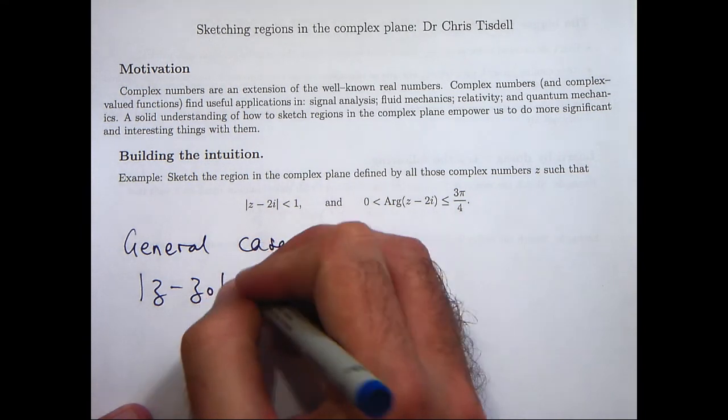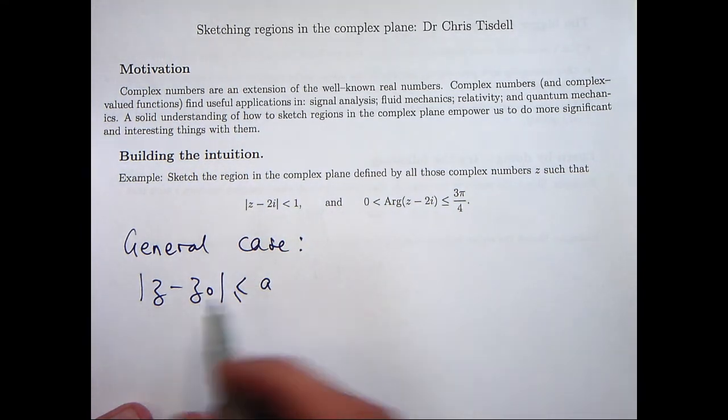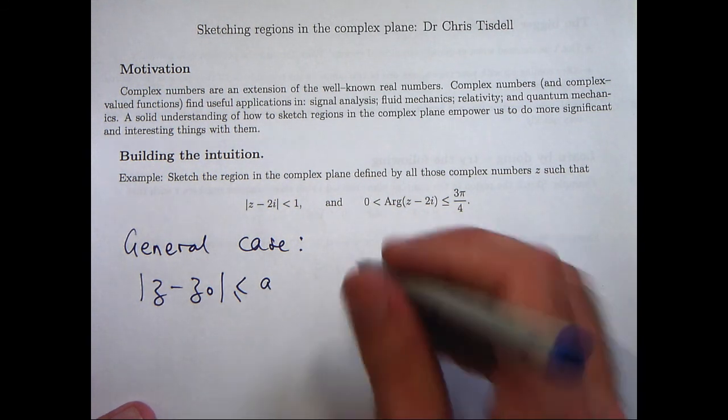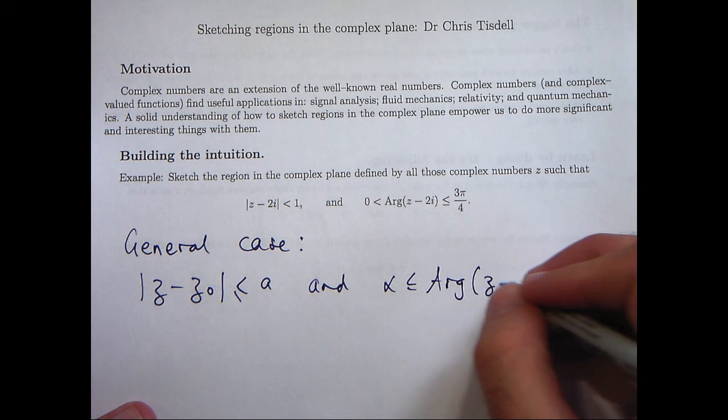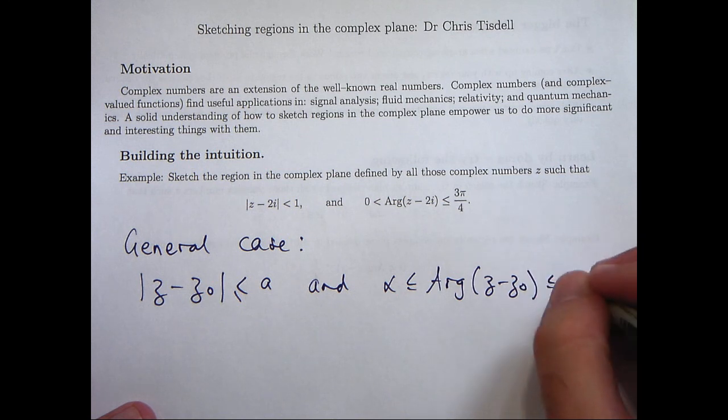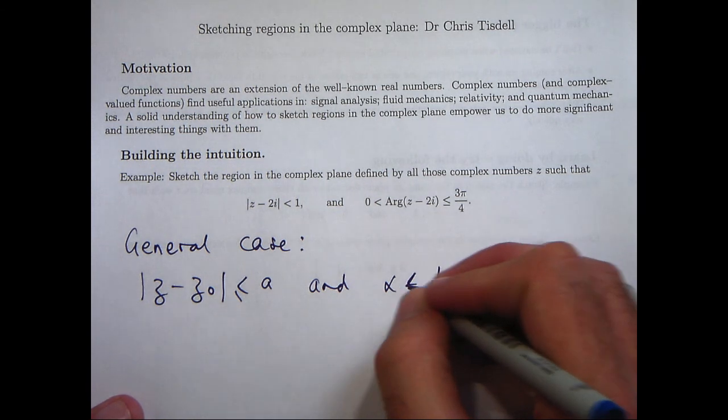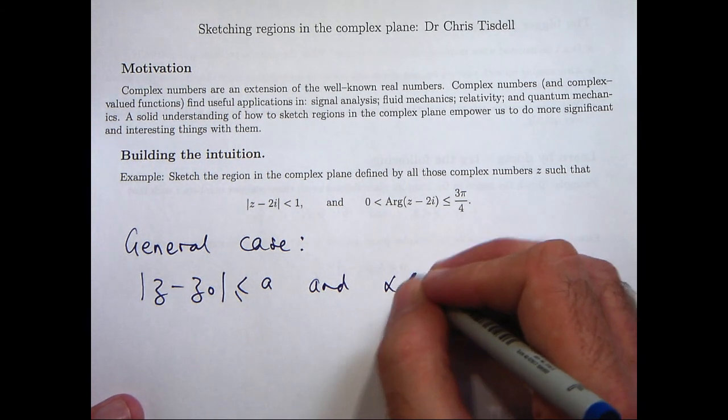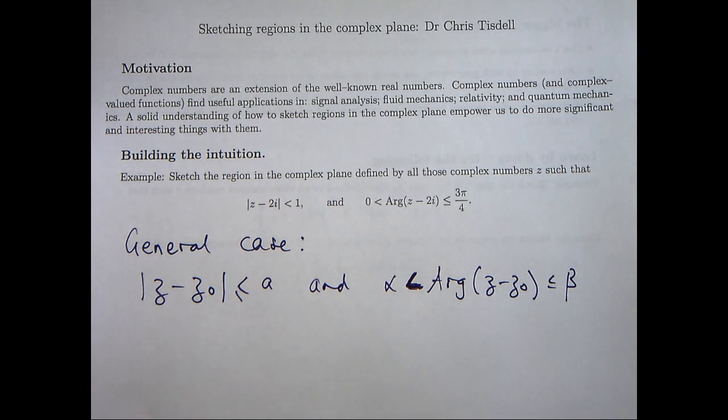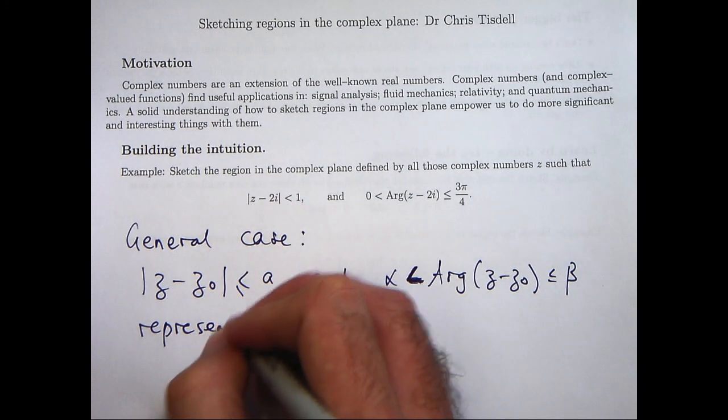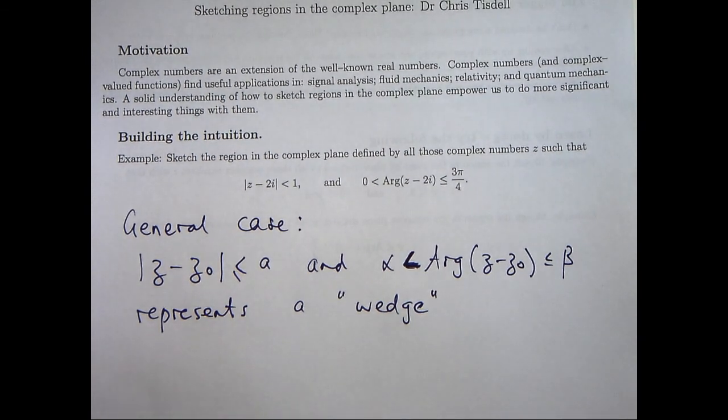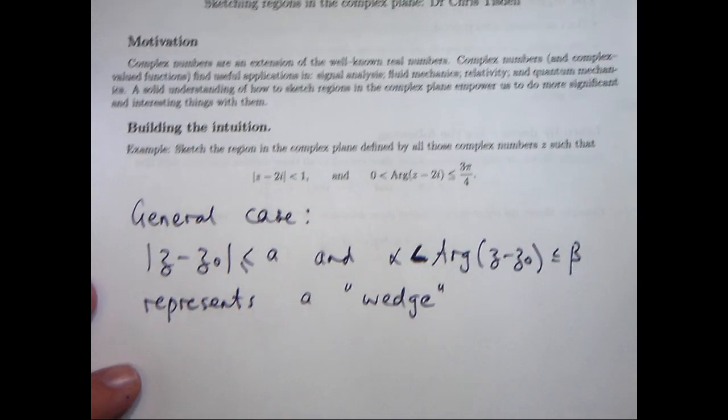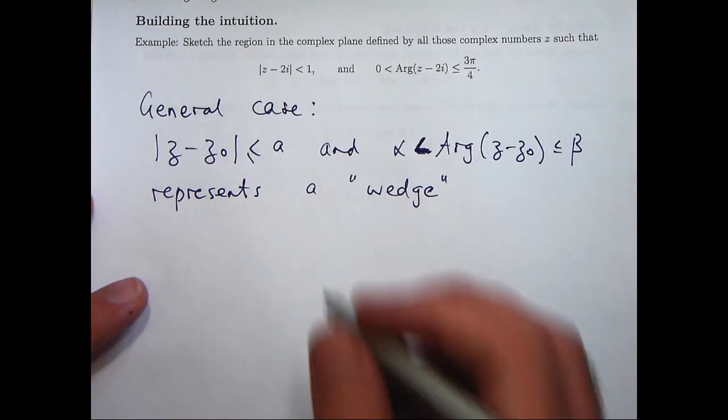So suppose z0 is a complex number, a is a positive real number, and alpha and beta are real numbers that are between minus pi and pi. This will represent a wedge in the complex plane. Now I'm using the term wedge very loosely there. Let me give you a picture and you'll see what I mean.